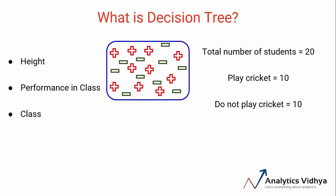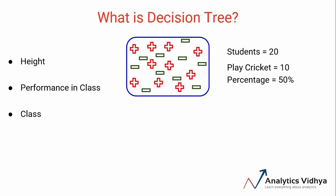When we look at this data, we have a total of 20 students out of which 10 play cricket. Hence the percentage of students who do play cricket is 50 percent, and we have attributes of students like height, performance in class, and from which class they belong.